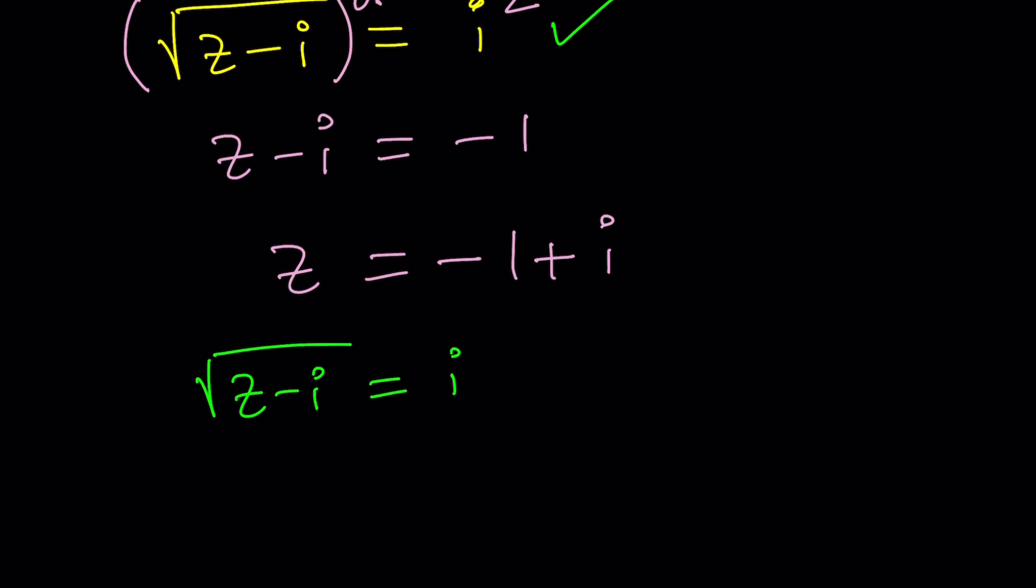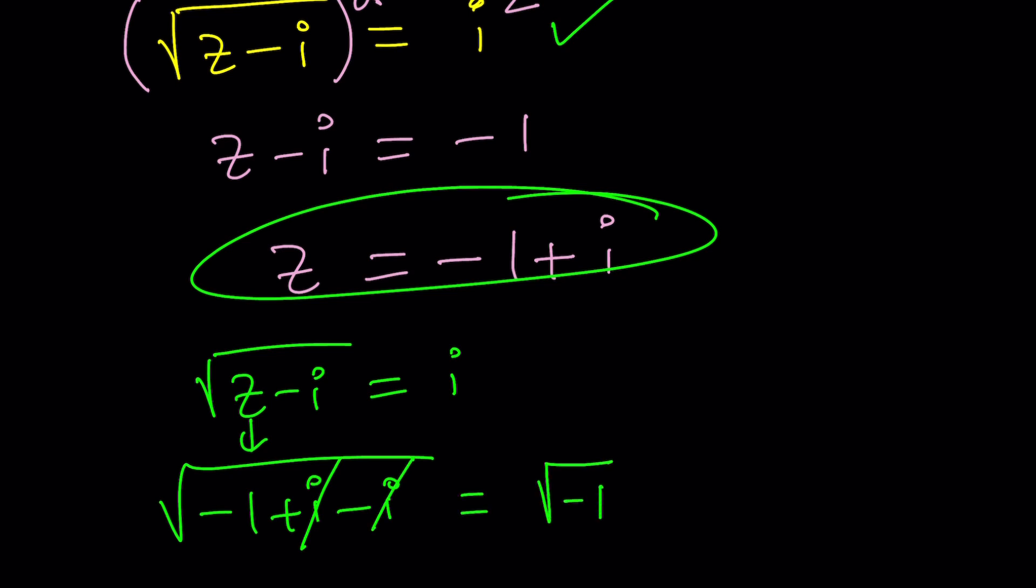And if z is equal to this, let's plug it in. Negative one plus i minus i, square root of that. And I'm hoping to get i from here. Square root of negative one. Now, the square root of negative one can be questioned because complex numbers have two square roots.